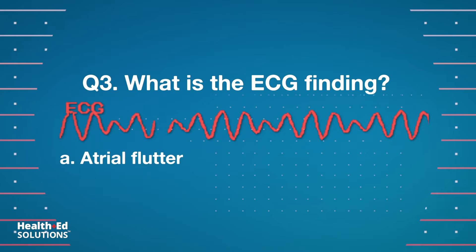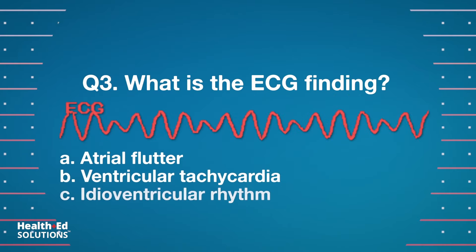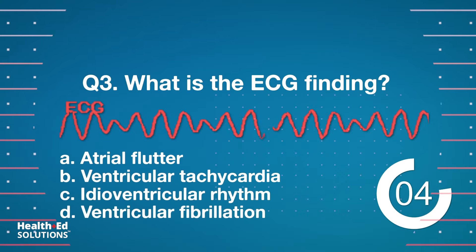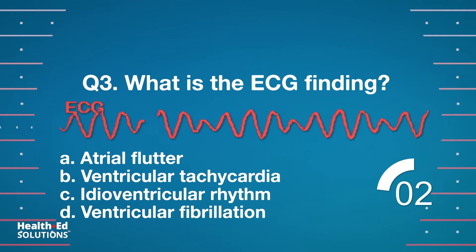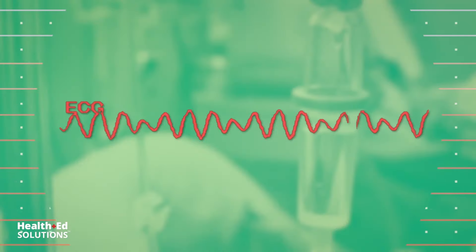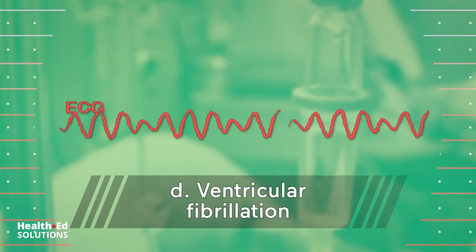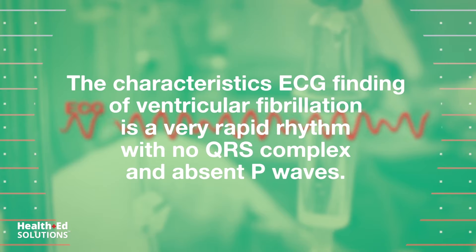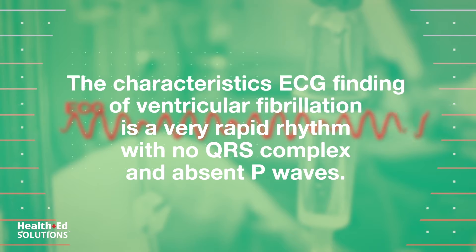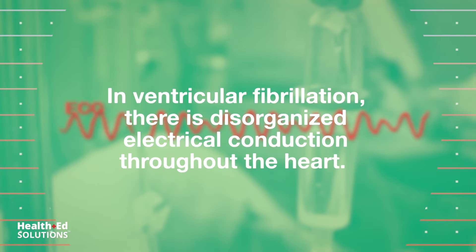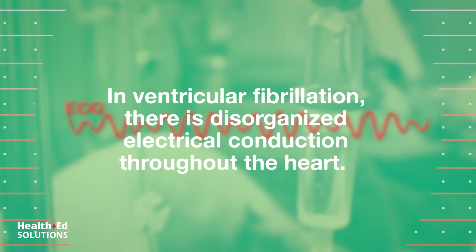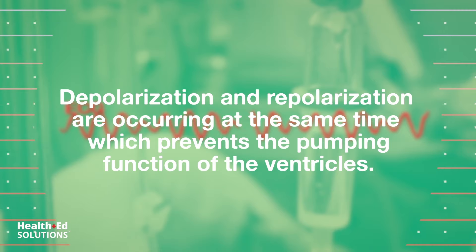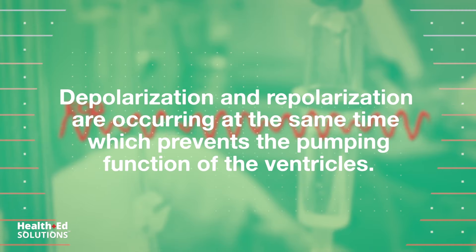A. Atrial flutter. B. Ventricular tachycardia. C. Idioventricular rhythm. D. Ventricular fibrillation. Correct answer D: Ventricular fibrillation. The characteristic ECG finding of ventricular fibrillation is a very rapid rhythm with no QRS complex and absent P waves. In ventricular fibrillation, there is disorganized electrical conduction throughout the heart. Depolarization and repolarization are occurring at the same time, which prevents the pumping function of the ventricles.